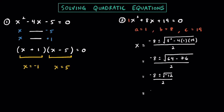The next thing is we're going to see if we can break up this radical a little bit. Breaking down the square root of negative 12, we can say that's the square root of 4 times the square root of negative 1 times the square root of 3. The square root of 4 is 2, the square root of negative 1 is i, so that's 2i root 3, all over 2. Writing our final solutions, dividing everything by 2, x equals negative 4 plus or minus i root 3. Those are two complex or imaginary solutions.